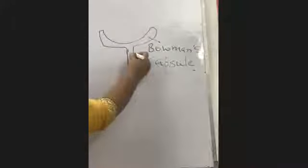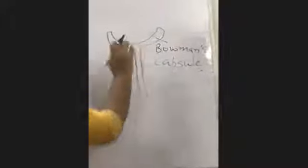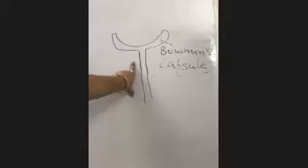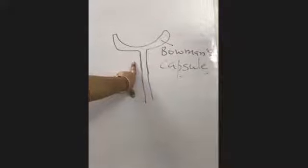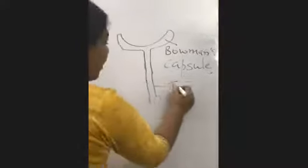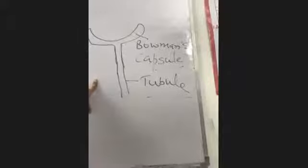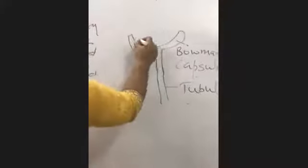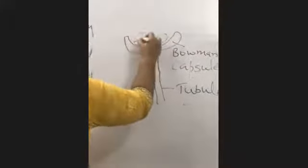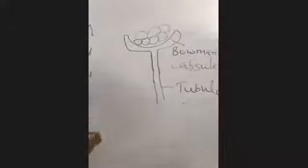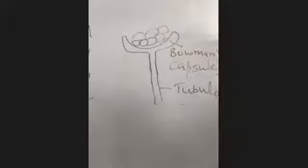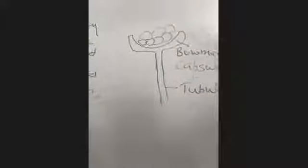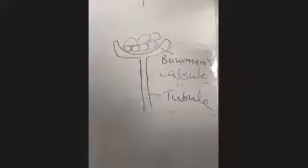This cup-shaped structure is called the Bowman's capsule. And here, a tube-like structure is shown below it. The bottom portion is the tube shape, and this tube-shaped structure is called the tubule.